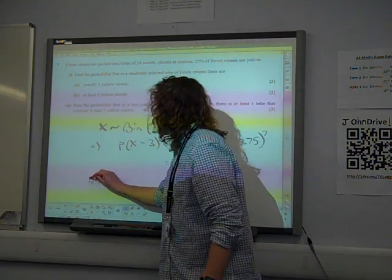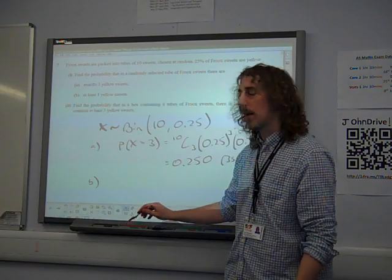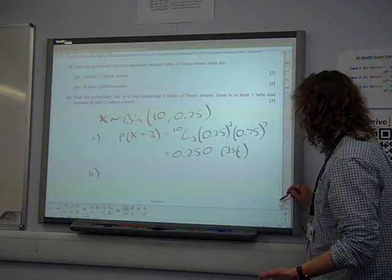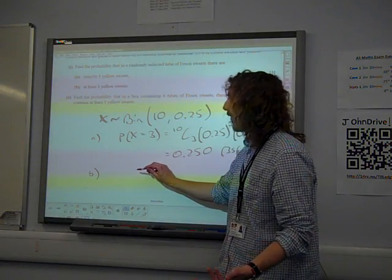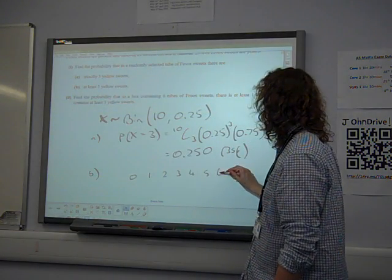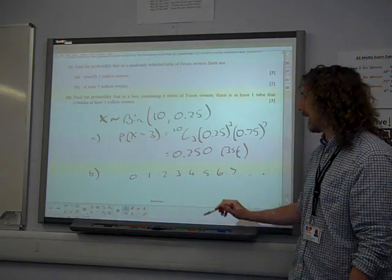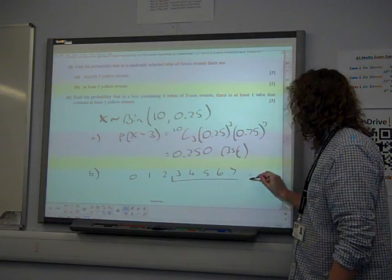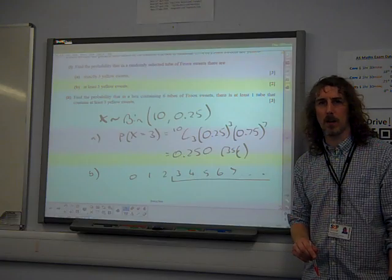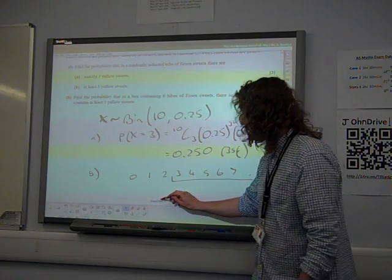Part B. At least three yellow sweets. Now this is one of those things where we're thinking of what the answers could be. It could be 0, 1, 2, 3, 4, all of these numbers like this, up to ten. At least three is that. That's what we're looking for. That is the opposite of less than or equal to two.